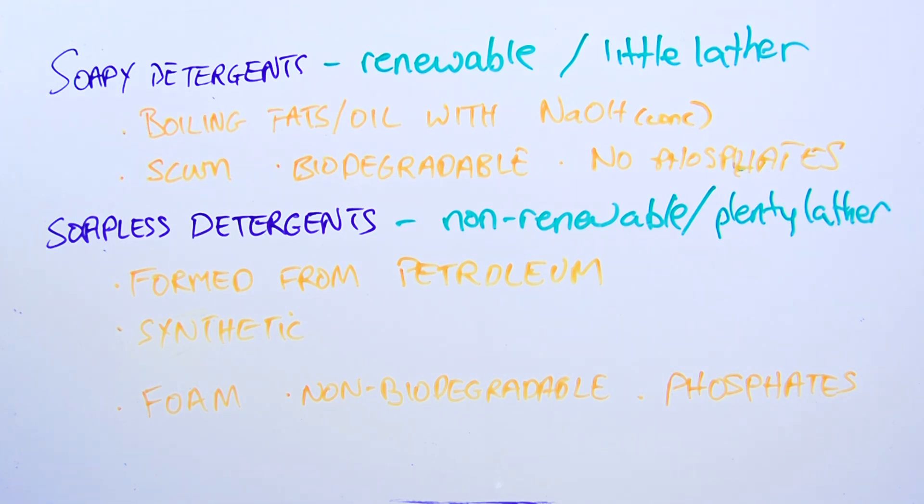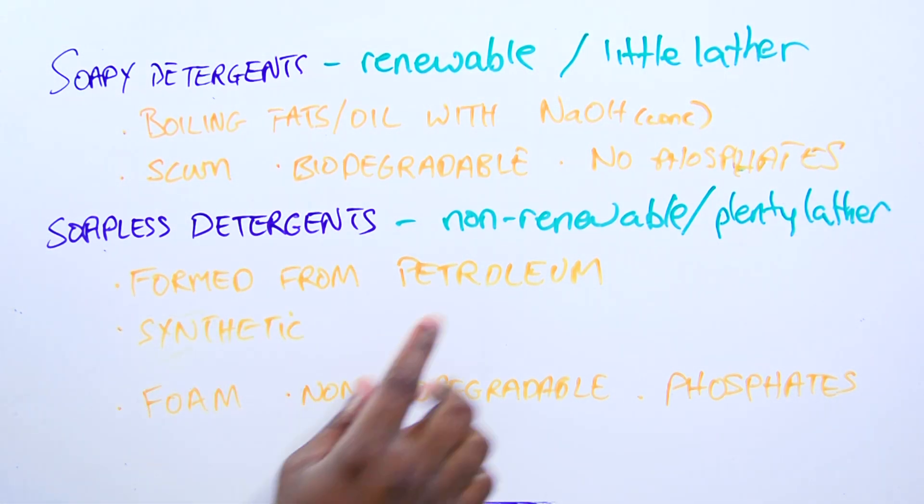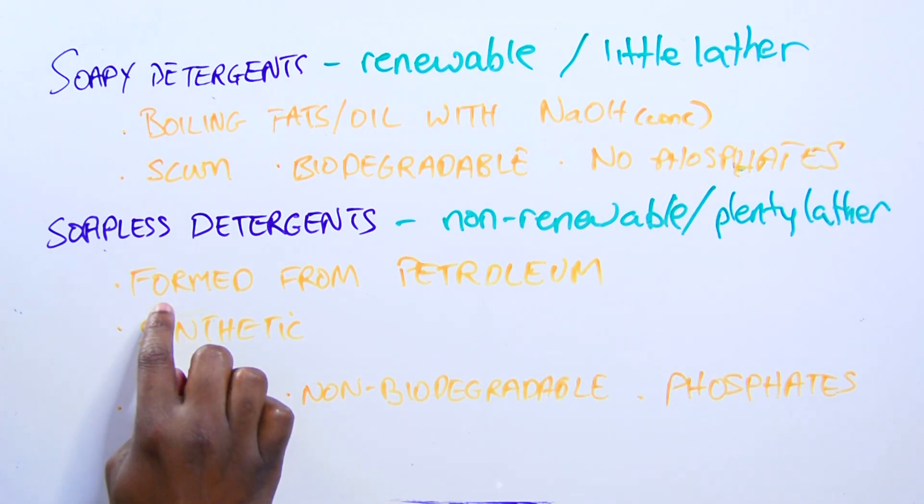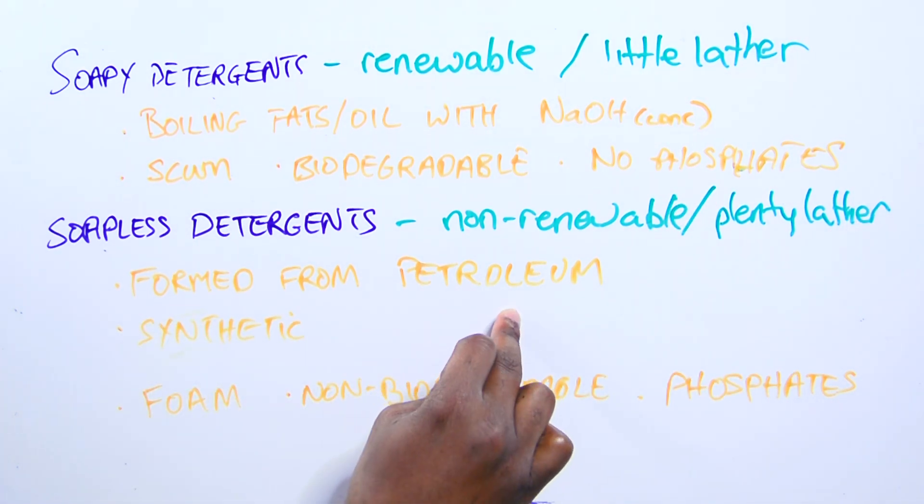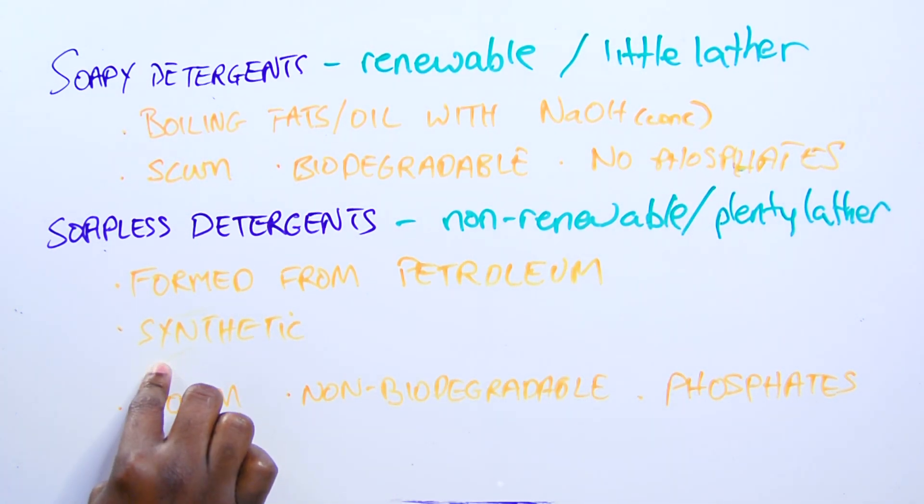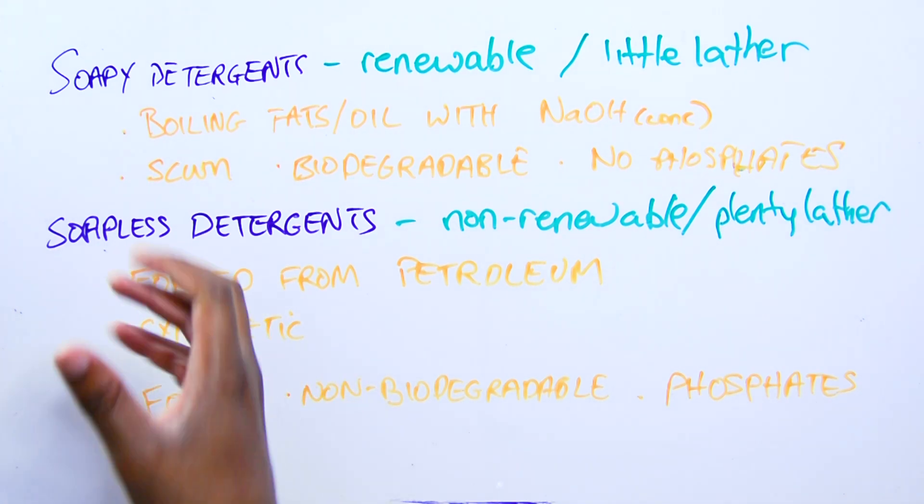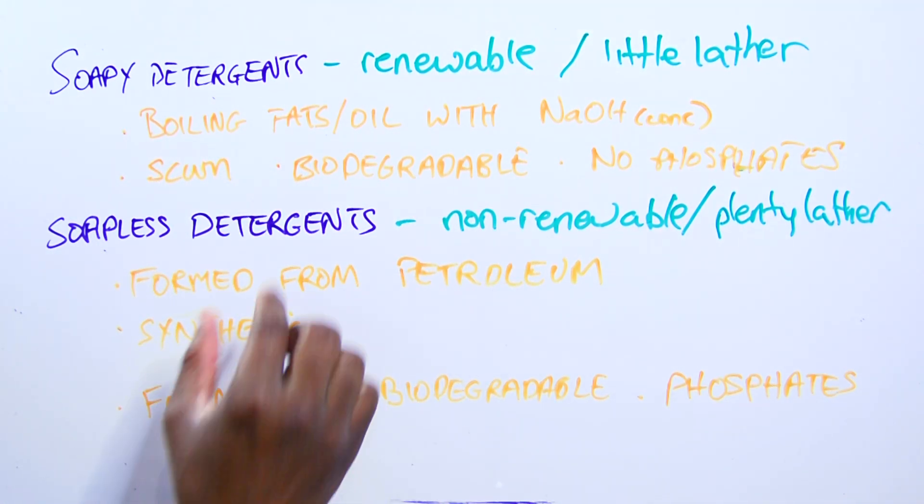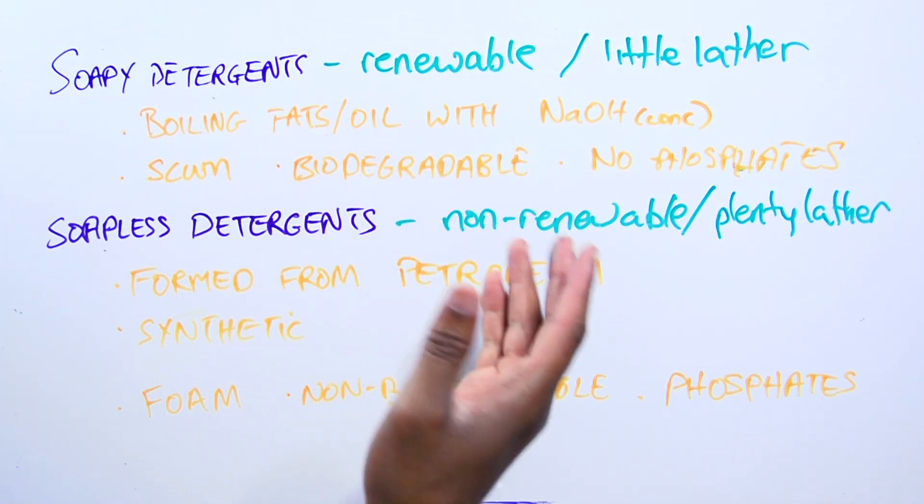But these soapless detergents, they foam plenty lather, which is what people like. But it's formed from petroleum, which is a non-renewable resource. We generally call this one synthetic. Although we made both of them. But this one is more synthetic because this came from animal fats. This came from petroleum.